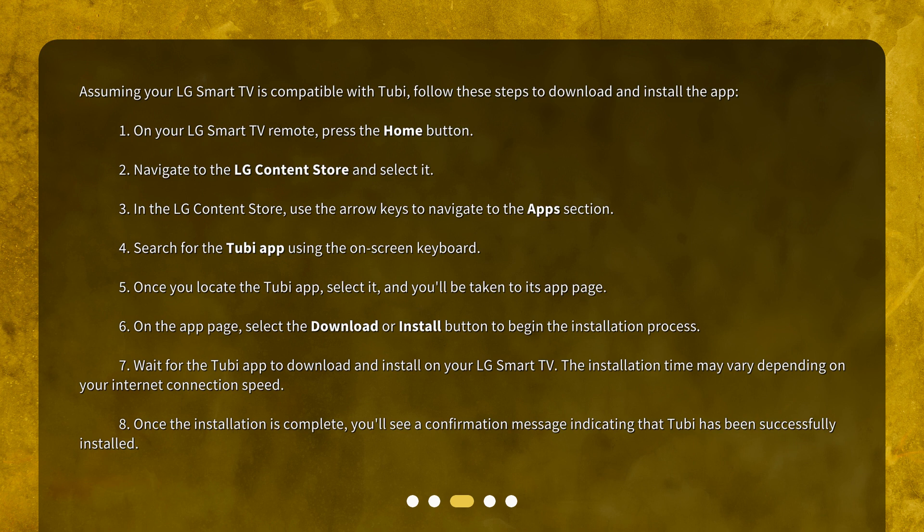4. Search for the Tubi app using the on-screen keyboard. 5. Once you locate the Tubi app, select it, and you'll be taken to its app page. 6. On the app page, select the Download or Install button to begin the installation process. 7. Wait for the Tubi app to download and install. The installation time may vary depending on your internet connection speed. 8. Once the installation is complete, you'll see a confirmation message indicating that Tubi has been successfully installed.